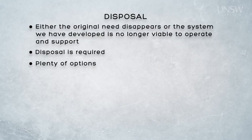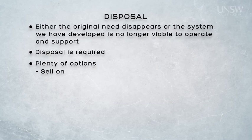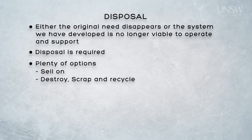The disposal options available to us are wide and varied. We have discussed the idea of on-selling our house — selling a system to a new organisation is certainly one of the disposal options available. Sometimes our systems are disposed of by destruction or scrapping. We have all seen examples of old buildings being knocked down and destroyed. It is possible that some recycling of parts or materials may occur when a system is disposed of in this way.